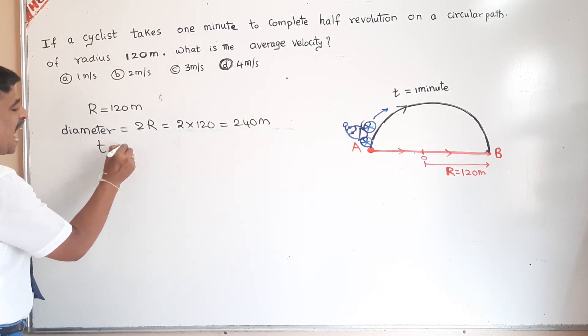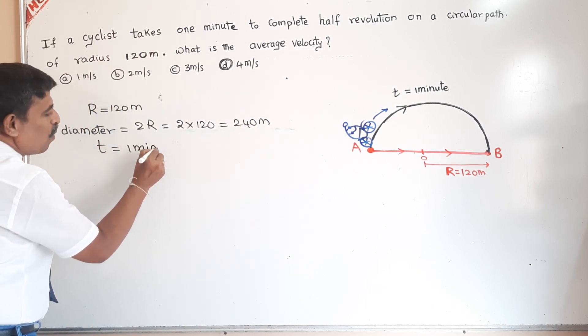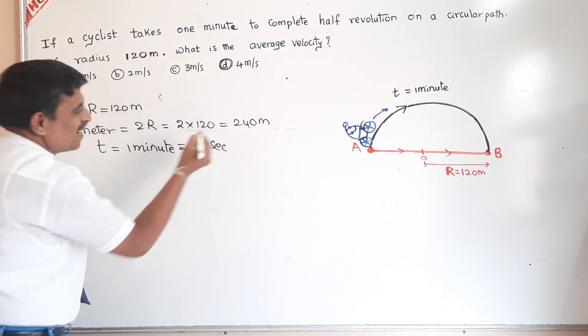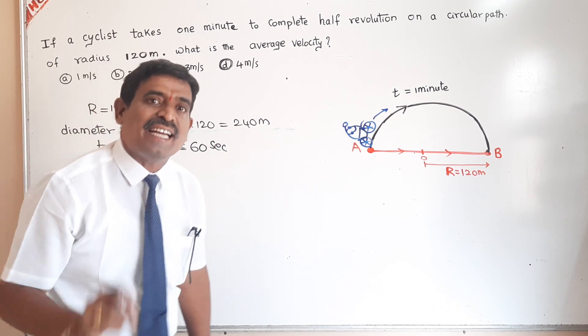Time is given as 1 minute. 1 minute means 60 seconds. They are asking average velocity.